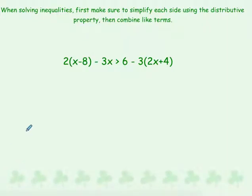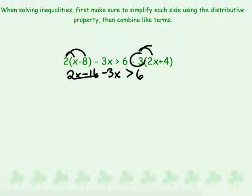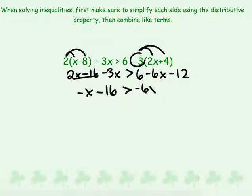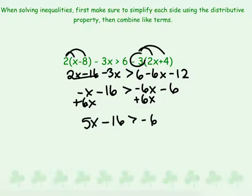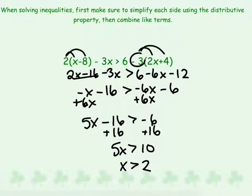Here are a couple more examples. In each case, remember we first need to distribute. So we get 2x minus 16 minus 3x is greater than 6. Then expanding the negative 3 gives minus 6x minus 12. Combining like terms on each side: negative x minus 16 is greater than negative 6x minus 6. Moving variables to the left by adding 6x: 5x minus 16 is greater than negative 6. Add 16, and 5x is greater than 10, so x must be greater than 2. We graph with an open dot on 2 going to the right.